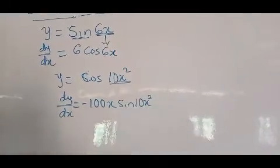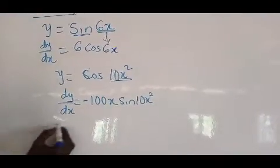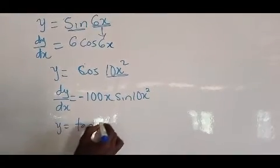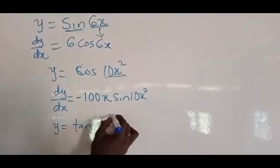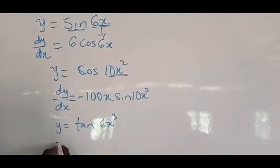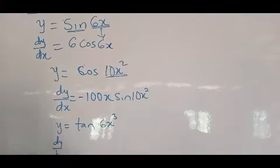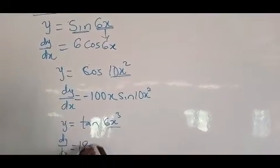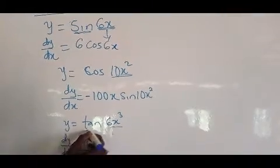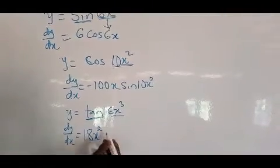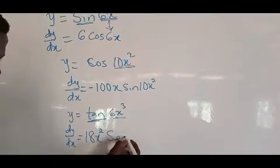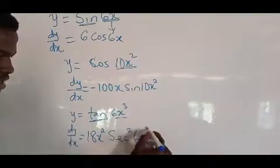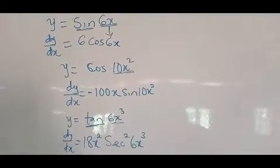Now let's have another question: y equals tan(6x³). dy/dx, we differentiate 6x³, we get 18x². If you differentiate tan, you get sec², then write this one back: 6x³.